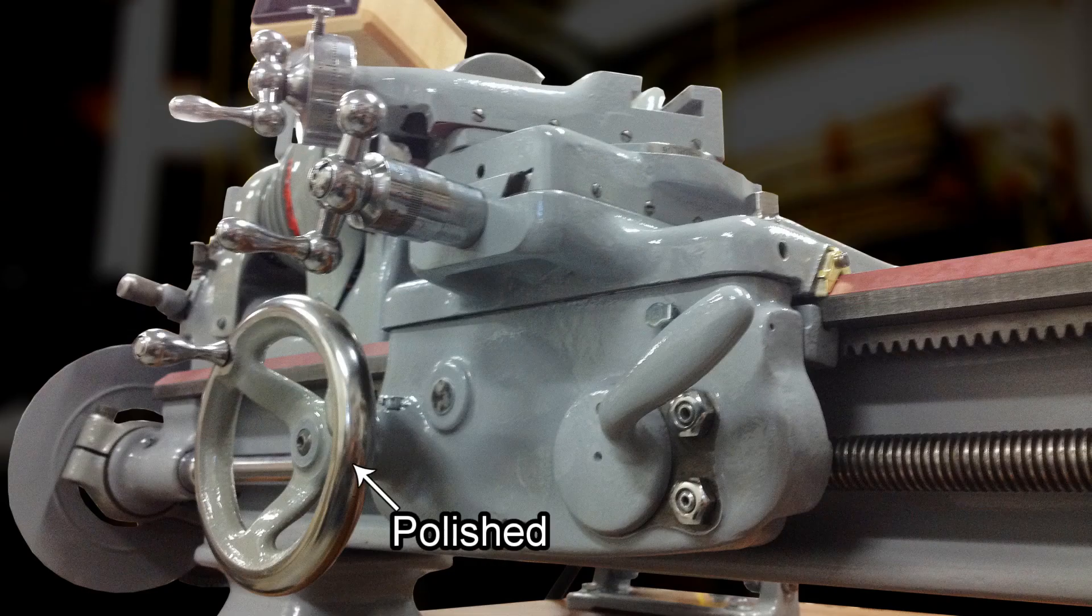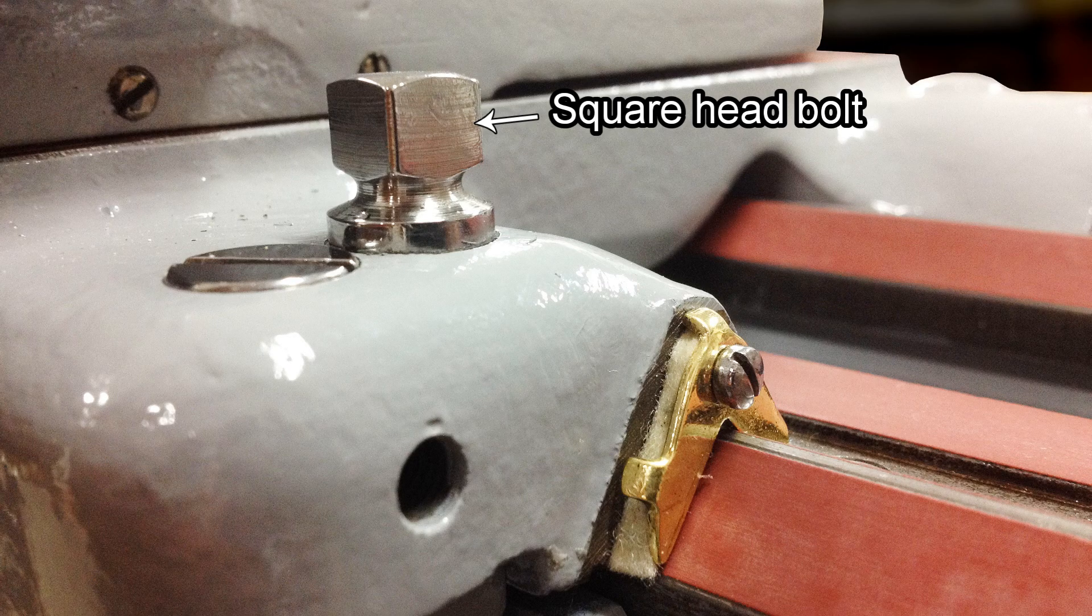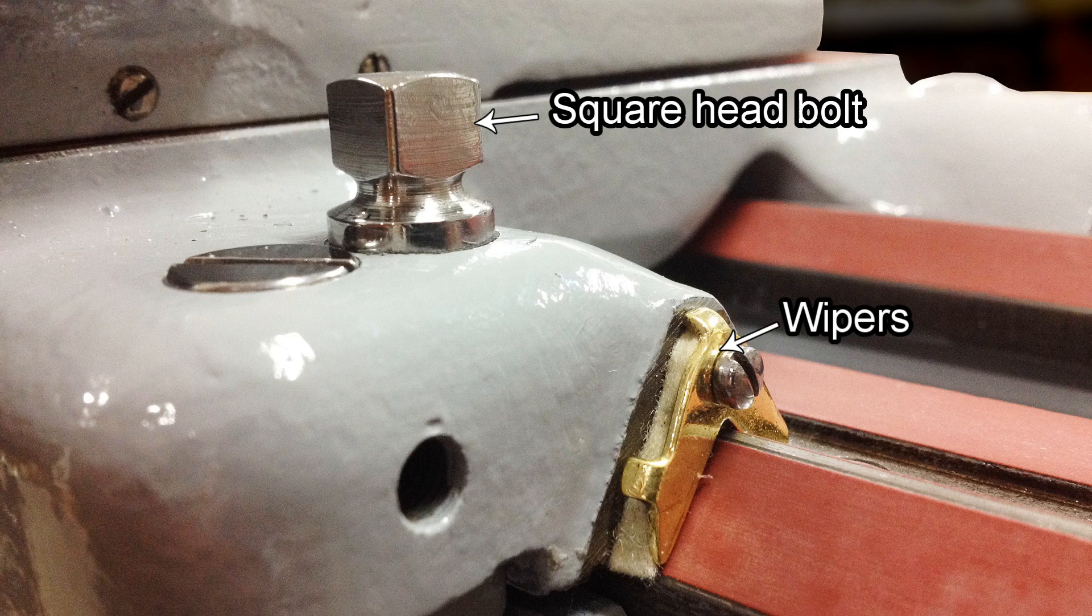Lots of polishing such as the wheels and dials. I also fixed the wear on the dials. I replaced the hex bolt with the model 405 square bolt and polished the wiper retainers.